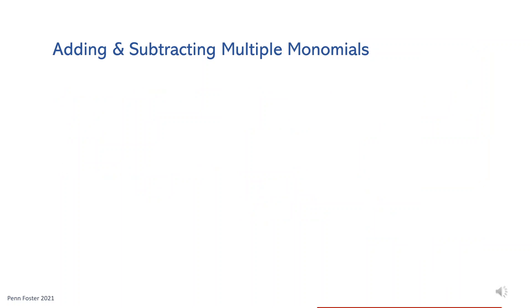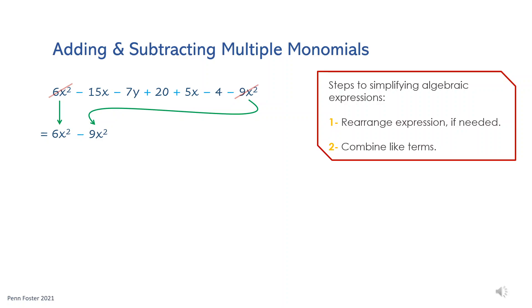To add or subtract more than two monomials, or in other words simplify polynomials, the same rules apply as before. One extra step that may help beginners is to rearrange the given polynomial to group like terms together. Bring down the first term, 6x squared, then look for any like terms. 9x squared is a like term — write it right after 6x squared. Be careful: any sign showing before a term belongs to that term, so when moving 9x squared, the minus sign must be moved with it. It's a good habit to lightly cross out moved terms so checking the remaining terms becomes easier.